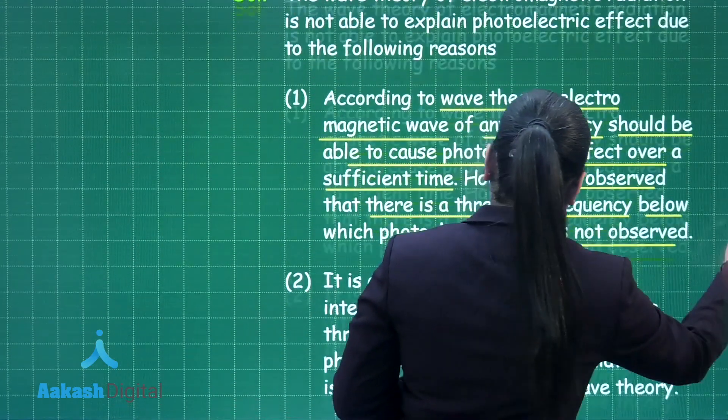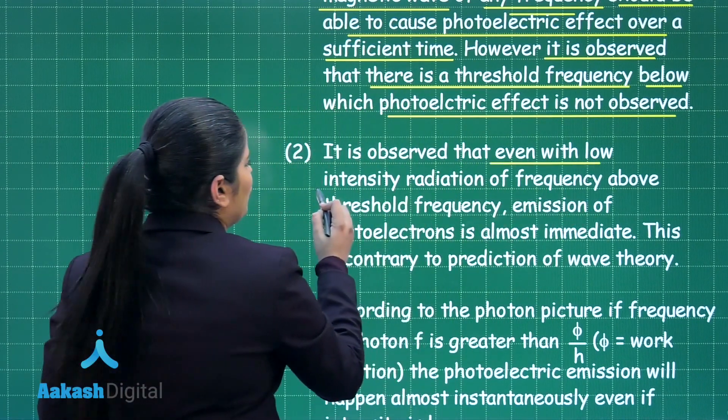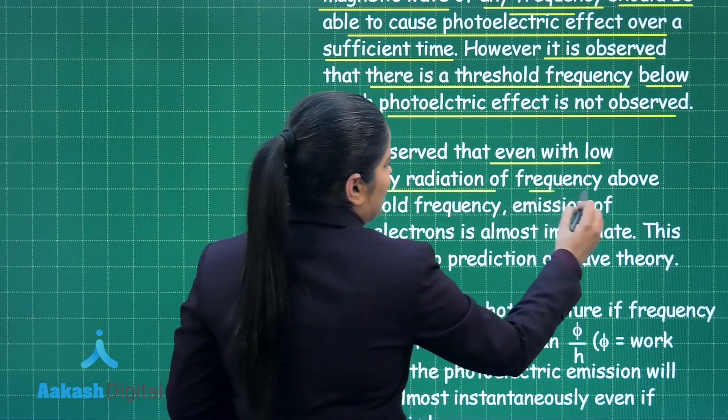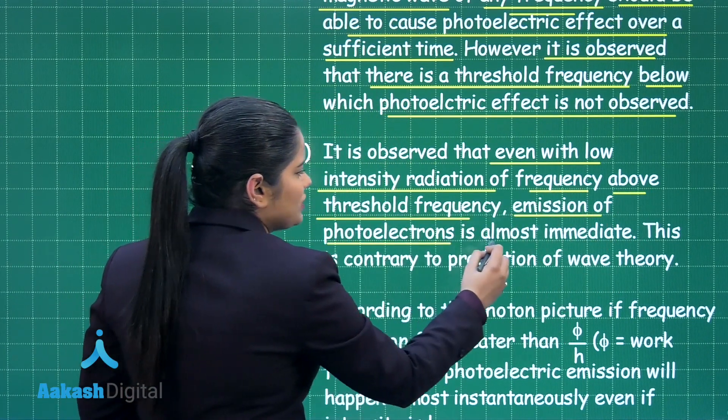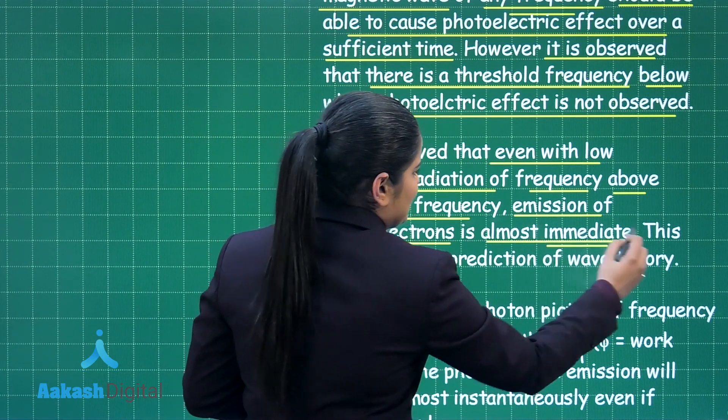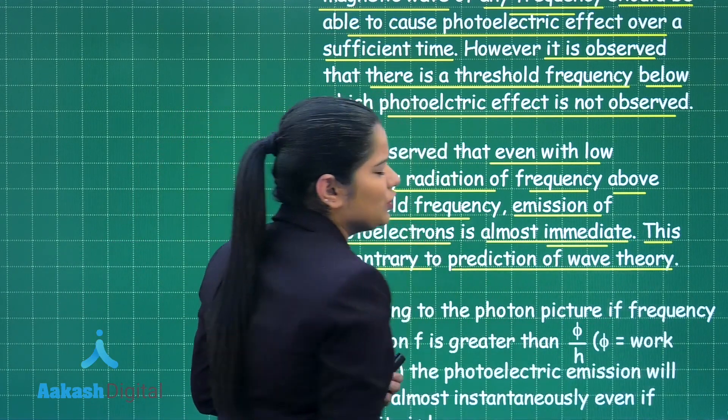Further, it is observed that even with low intensity radiation of frequency above the threshold frequency, the emission of photoelectrons is almost immediate. This is again contrary to the prediction of the wave theory.